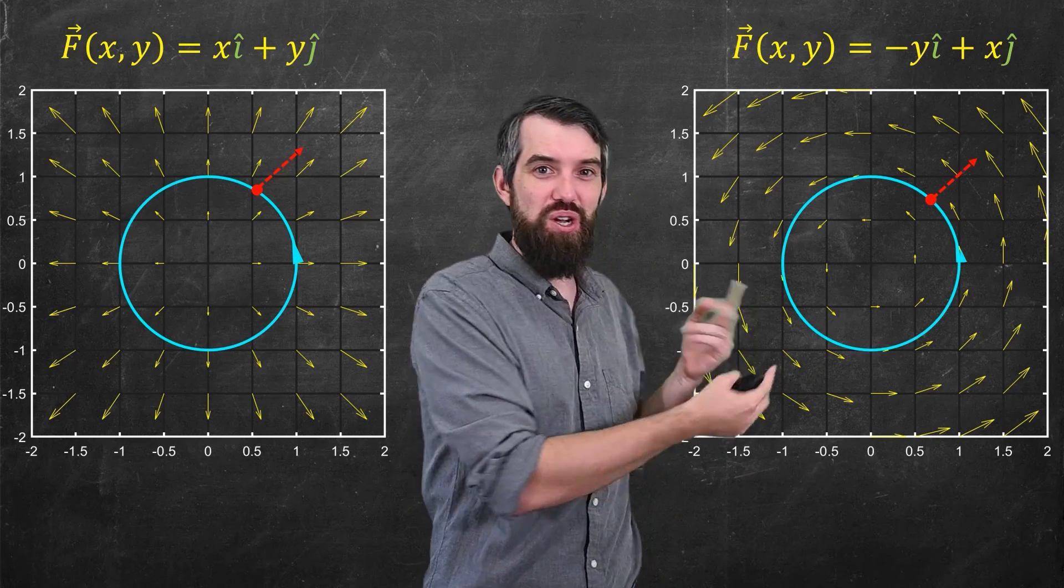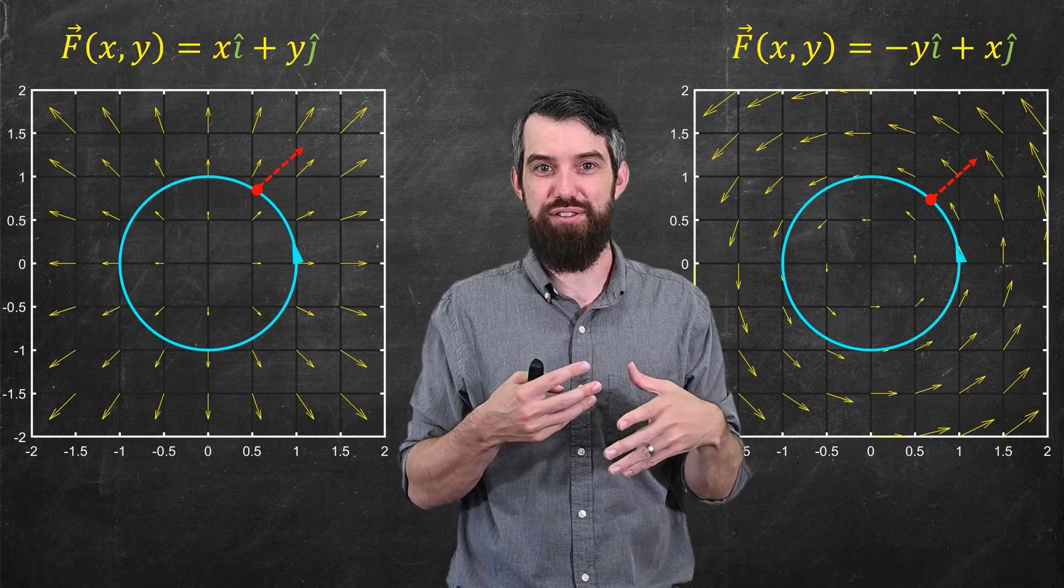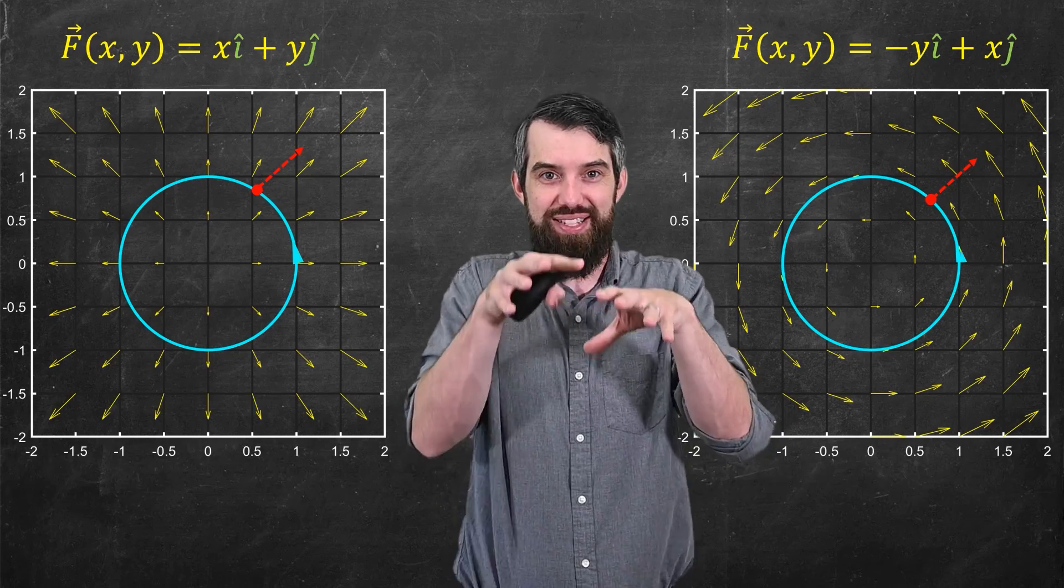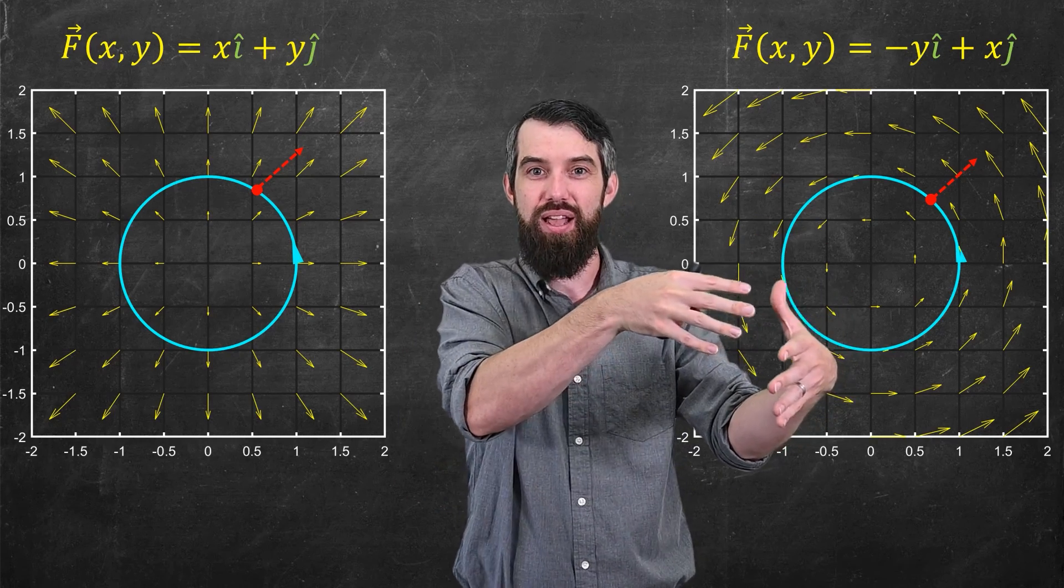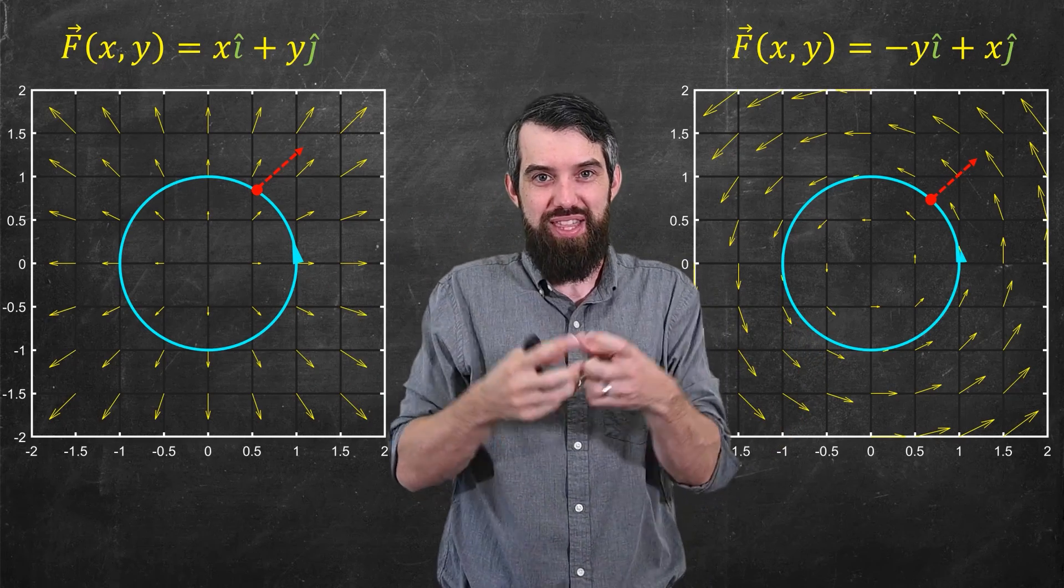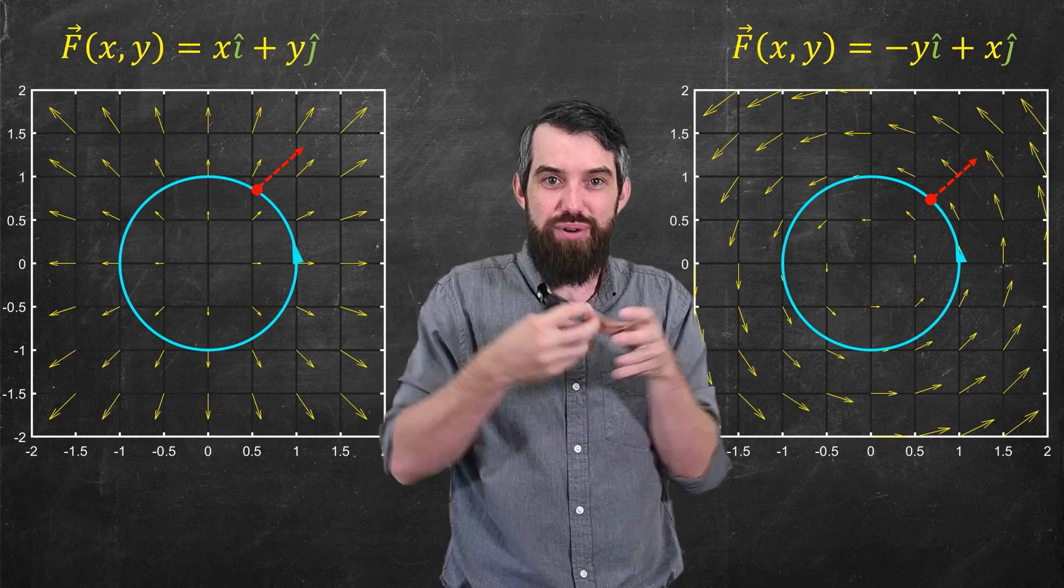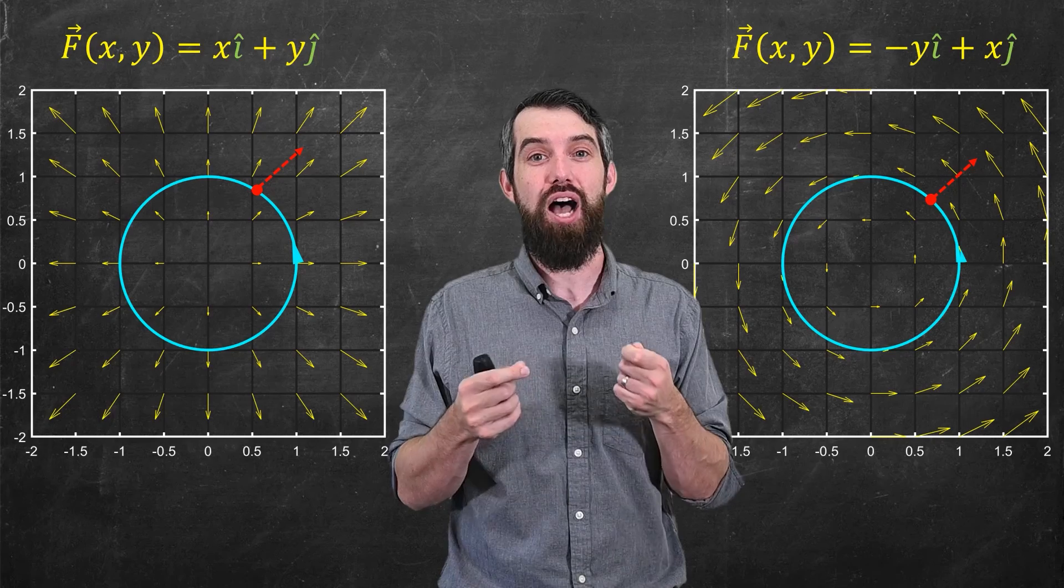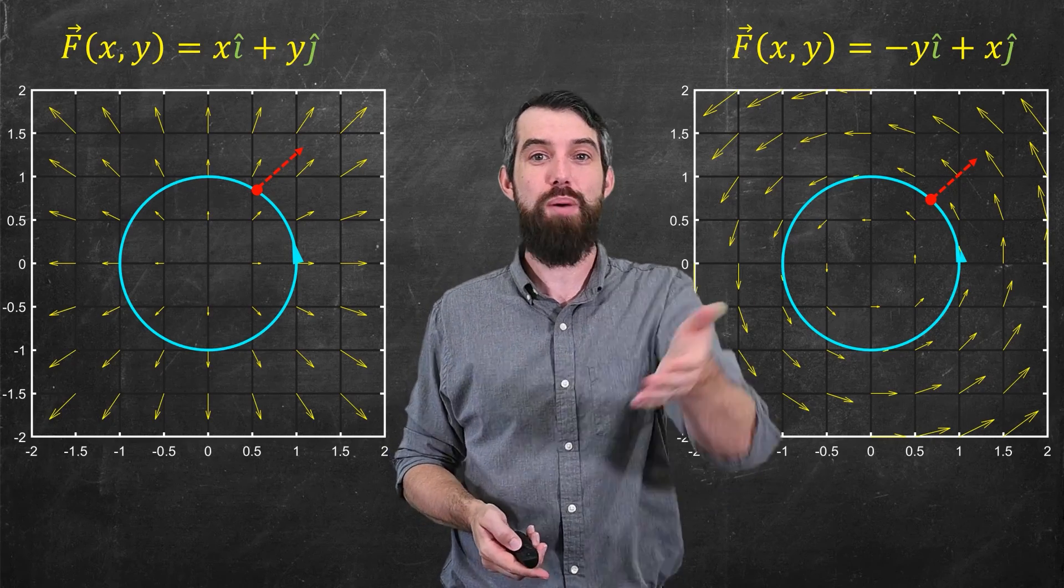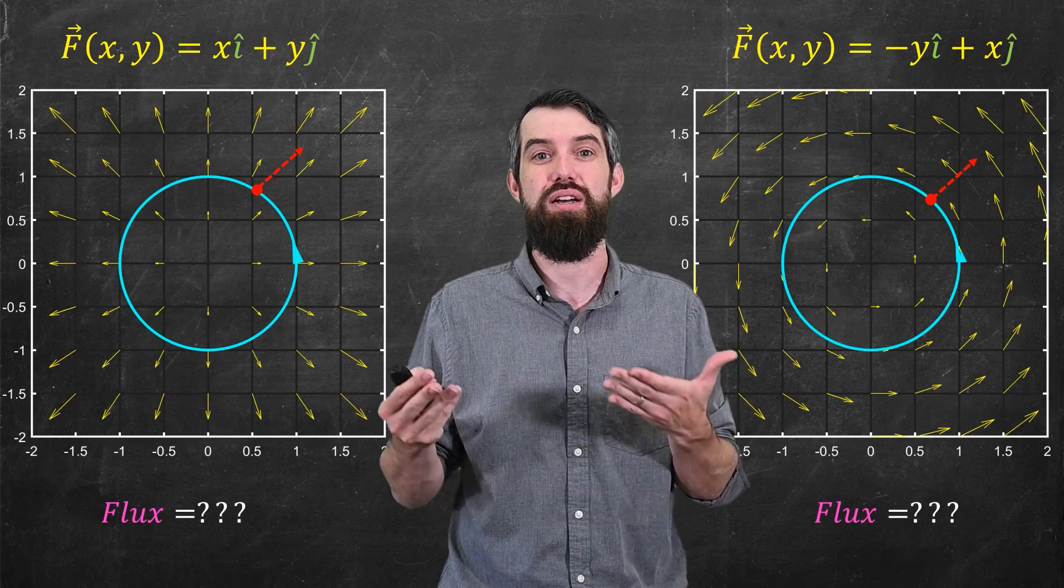In the spin field where everything's going around in a circle there's actually no transfer around that boundary. All the water that's inside just spins around inside. All the water that's outside spins around outside. But in this dispersion field where everything's leaving away, well as time goes on the water leaves from the center and it crosses out that barrier. That's what I want to measure. That's my notion of flux. So I want to come up with some formula that describes this idea that I'm talking about, this idea of flux.